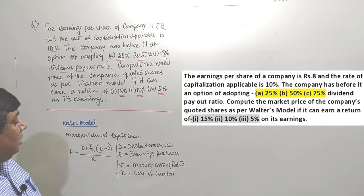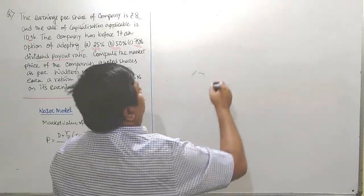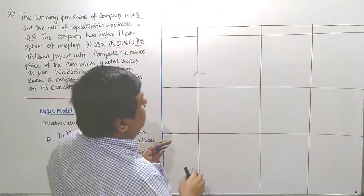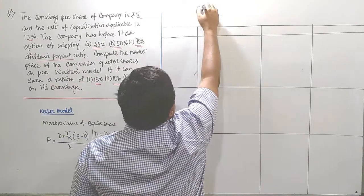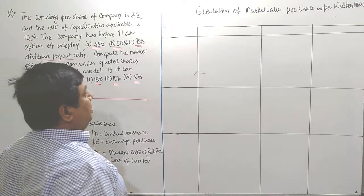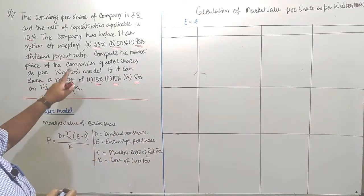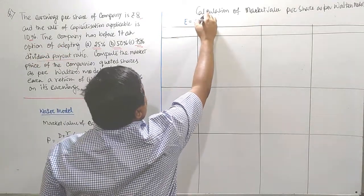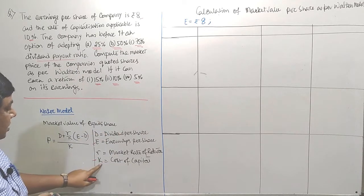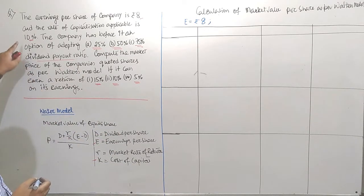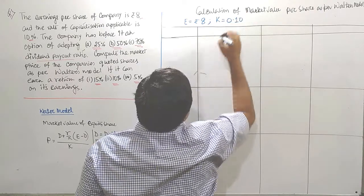Better you can follow a box platform. Since 9 boxes or 9 separate combinations are available here, calculation of market return per share as per Walter's Model. Let me set up the rigid items. One is earnings per share, that is Rs 8. Another item which is also rigid in all 9 combinations is K, cost of capital.